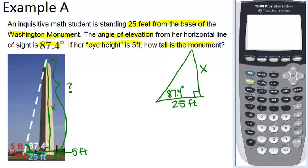So what we want to do is figure out which trig ratio we're going to use. The first thing you want to do is label your sides. According to the 87.4 degrees, X is the opposite side and 25 feet is the adjacent side.